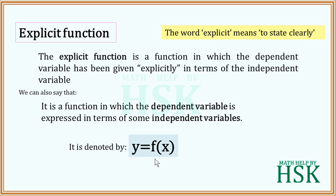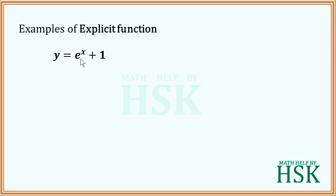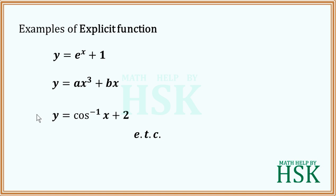Examples of explicit functions include: y = e^(x+1), y = ax³ + bx, y = cos⁻¹(x) + 2, and so on. In all these functions, y is on one side and the independent variable x is on the other side — y is clearly stated in terms of x.